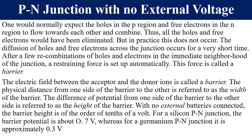We are still looking at a PN junction to which no voltage is being applied. When the two materials are joined together, one would expect holes and electrons to flow towards each other and combine, but this does not fully occur, as it would eliminate all the holes and electrons. Diffusion of holes and electrons across the junction occurs for a very short period of time, and after the barrier emerges, it stops further diffusion of holes and electrons across the junction.